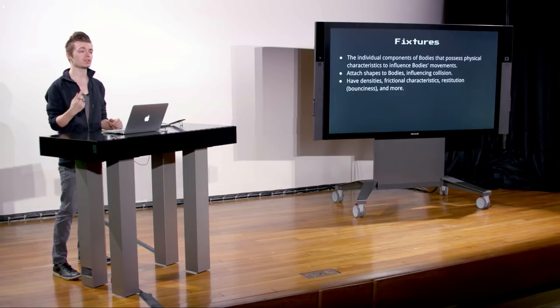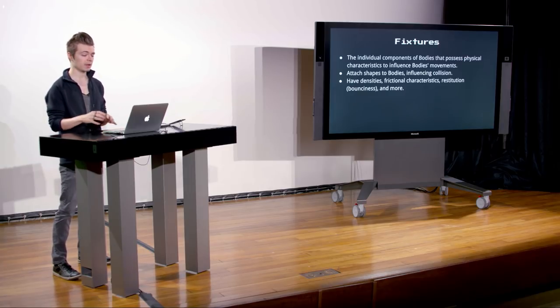Fixtures, in addition to attaching shapes to bodies, have density — things with higher density will push others farther when they collide, as if they have more weight. They also have friction and restitution. Restitution is bounciness — with no restitution, when the alien hits the ground it falls flat. With higher restitution, it will actually bounce when it hits the ground and interact with the world differently.